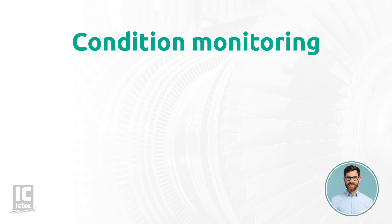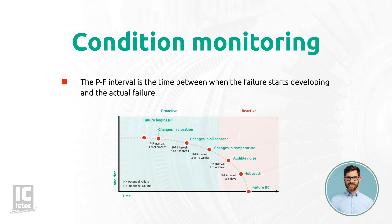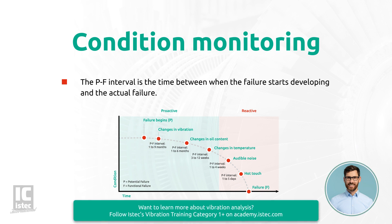Why we choose to monitor and analyze vibrations over other methods is not a coincidence. To understand this, we need to explain the PF interval. The PF interval is the time between when the failure starts developing and the actual failure — in other words, the time between the so-called potential failure and the functional failure.